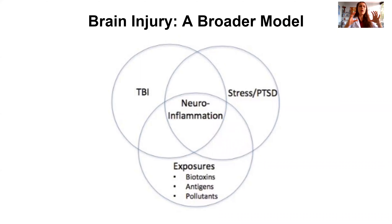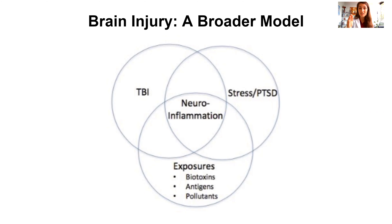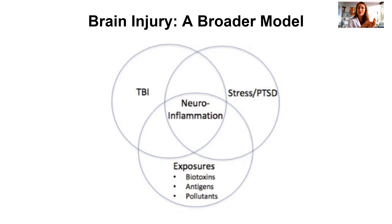Let's zoom out and look at the different traumas that lead to neuroinflammation. Biotoxins, exposures, antigens, and pollutants can all lead to neuroinflammation. Biotoxins and fungi are living and can continue growing, so we have to keep them in check. Antigens from foods we react to also inflame the brain. Gluten is one of those major antigens — because it's been so genetically modified, our body sees it as a foreign molecule and mounts an immunological response against it, leading to neuroinflammation.